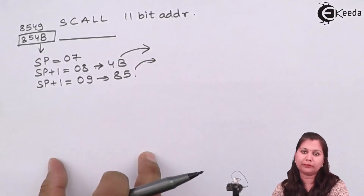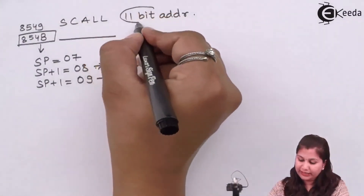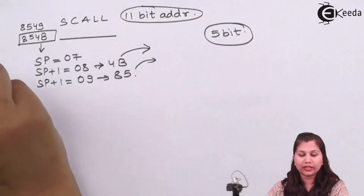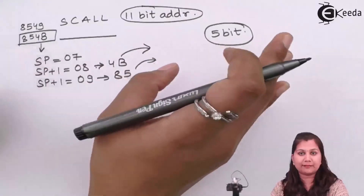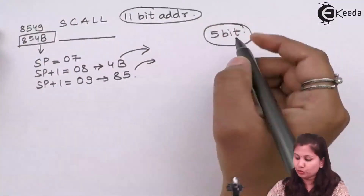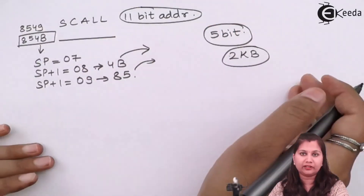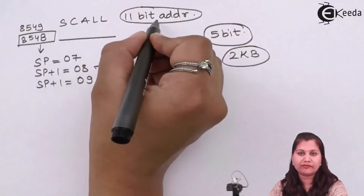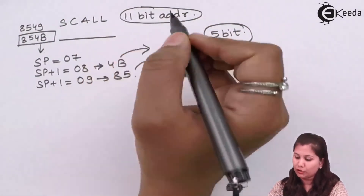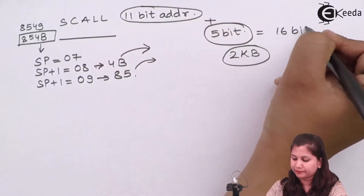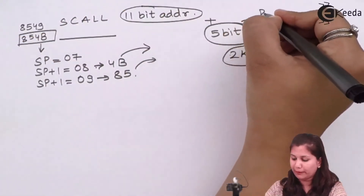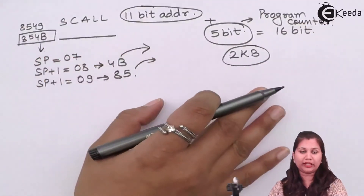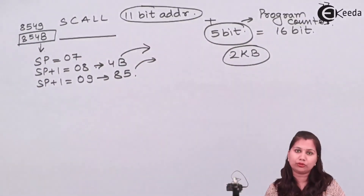In ACALL, only an 11-bit address is written in the instruction. The remaining 5 bits come from the program counter — they are the same since the subroutine is on the same memory page. So the complete 16-bit address is formed from 11 bits in the instruction and 5 bits from the program counter. Because the subroutine is on the same 2-kilobyte page, it is called the absolute call instruction.